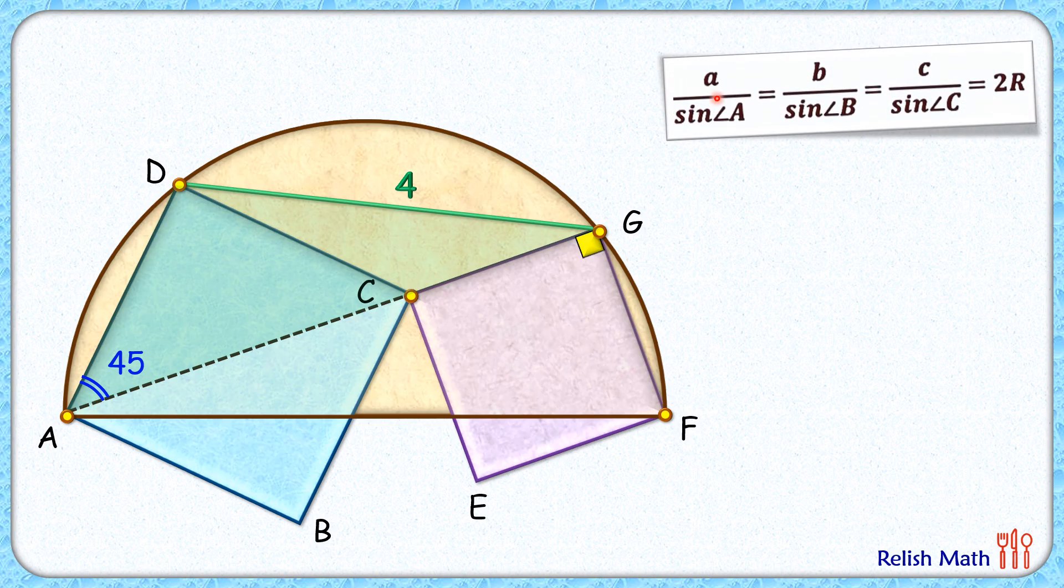a/sin A = b/sin B = c/sin C = 2R, where R is the circumradius. For this triangle, the circumradius is this brown circle, and this R is what we have to find.